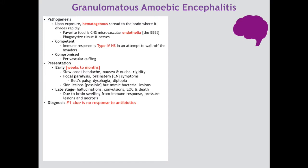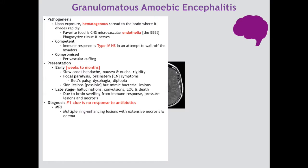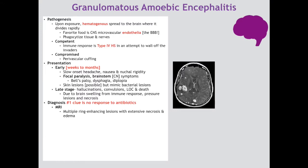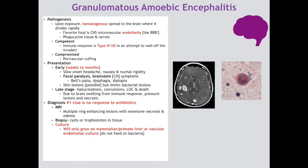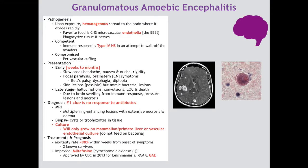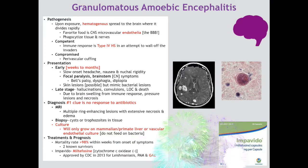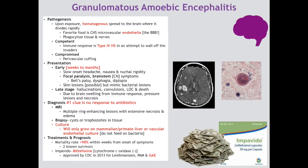Diagnosis is typically empirical — the number one clue is that the patient will not respond to antibiotics. On MRI you will appreciate multiple ring-enhancing lesions with extensive necrosis and edema, though this is not specific. Biopsy may reveal cysts or trophozoites in brain tissue. The gold standard, if possible, is culture on mammalian primate liver or vascular endothelial cells, because Balamuthia does not feed on bacteria. Prognosis is grim at greater than 98% mortality within weeks of onset. If caught early, the drug of choice is Impavido (miltefosine), a cytochrome c oxidase inhibitor approved by the CDC in 2013. One full course costs $58,000 USD.